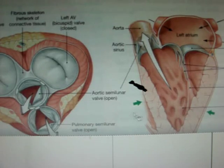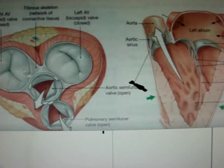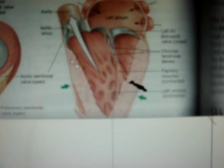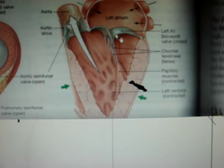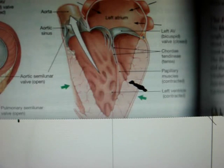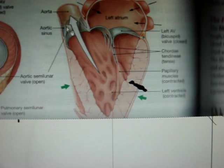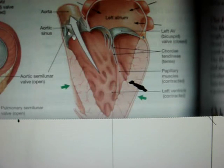Here you have more diagrams. When the atrioventricular valves are closed, the semilunar valves are open. Here you have that again — the valve is closed, so the semilunar is open. One last note: the aortic sinus is just a little sac in the aorta to prevent backflow. No big deal at all.